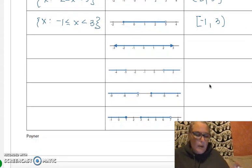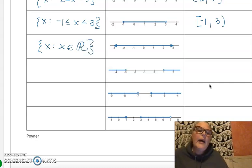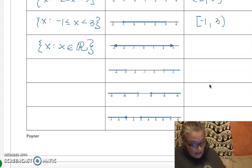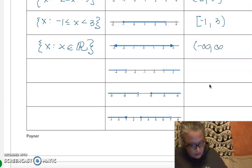When all numbers are covered, in set builder notation that's all real numbers — written as x such that x is an element of the real number set, using a scripty R. In interval notation, the lowest number goes toward negative infinity and the highest toward positive infinity, so to indicate the real numbers you write from negative infinity to infinity.